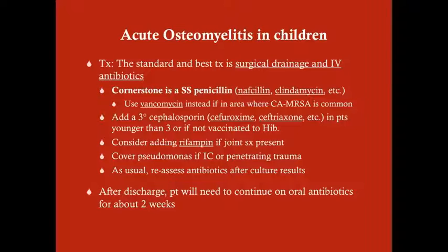If the patient has joint symptoms, consider adding rifampin. Rifampin is a great drug because it can penetrate biofilms — something relatively unique in the antibiotic world. When you get joint disease in osteomyelitis, there is usually a biofilm present, so rifampin is a great addition. If the patient is immunocompromised or has penetrating trauma, cover Pseudomonas with options like linezolid, tobramycin, or piperacillin-tazobactam.